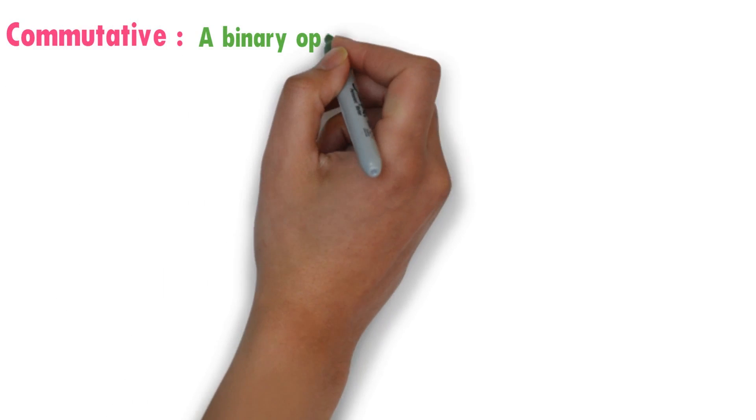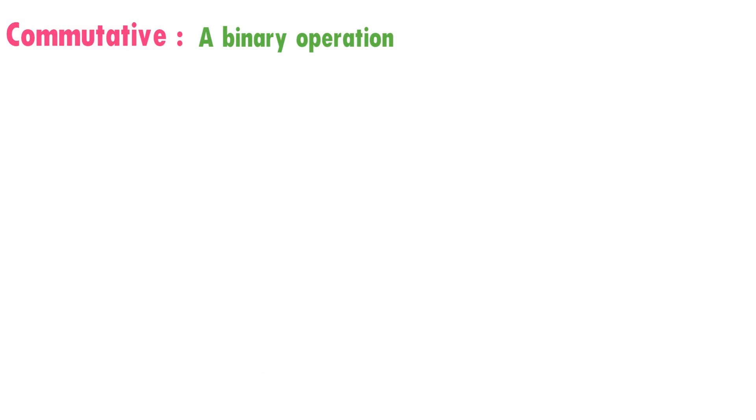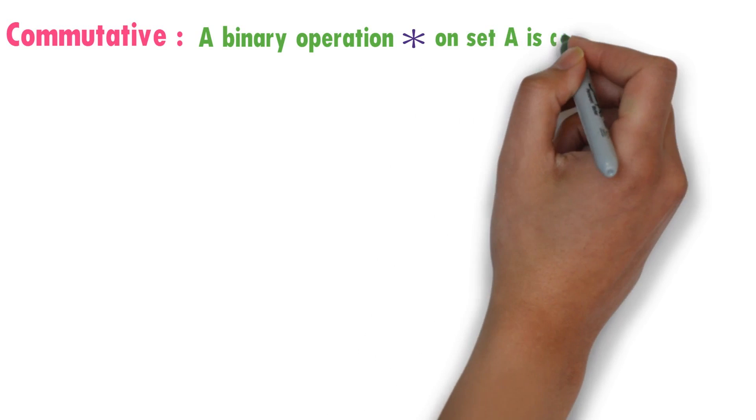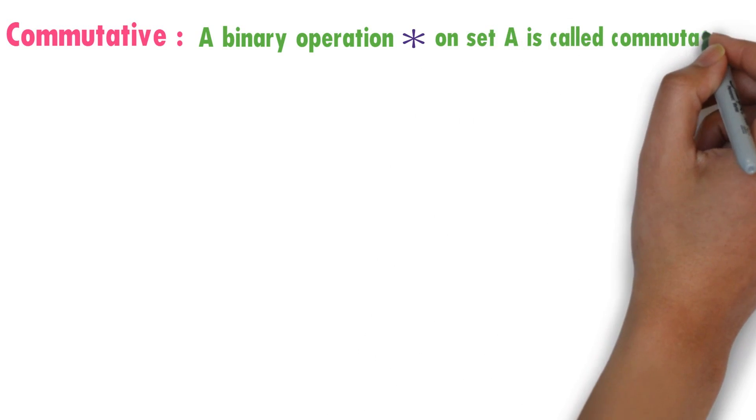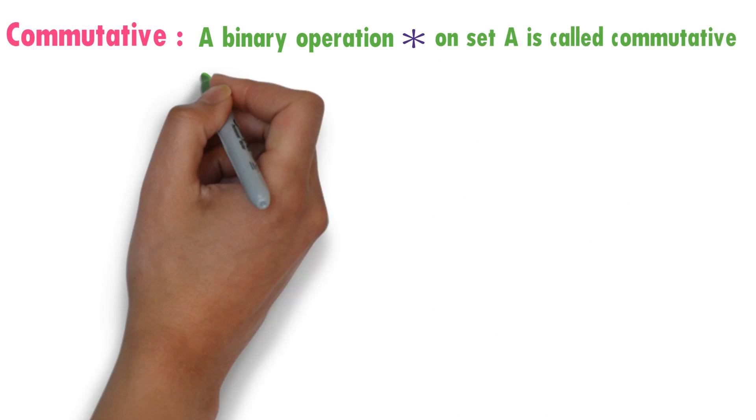A binary operation star - see here, star is a binary operation - a binary operation star on set A, star is already a binary operation on set A, is called commutative if A star B equals B star A for every A, B belongs to A.